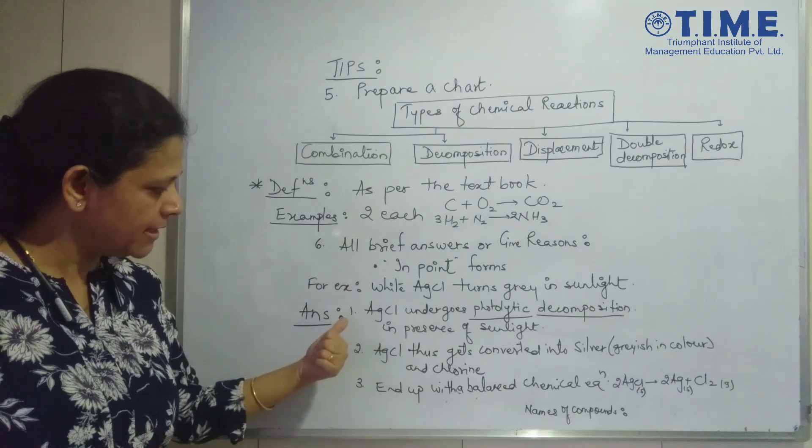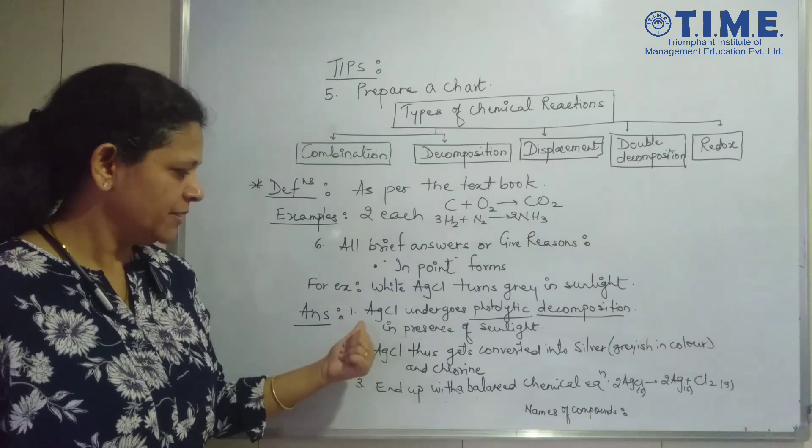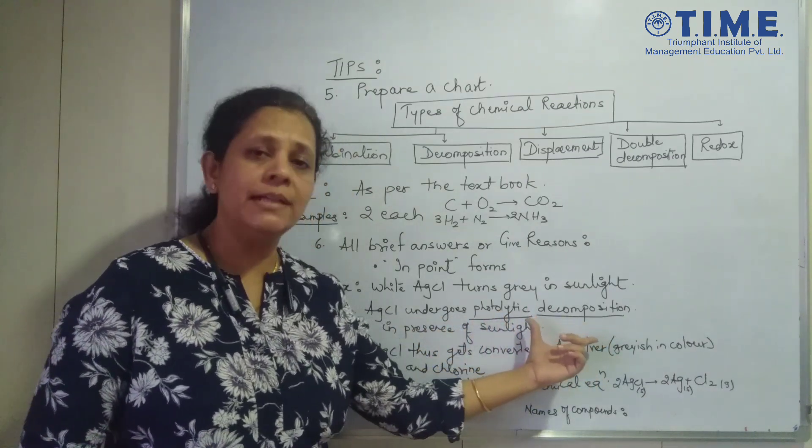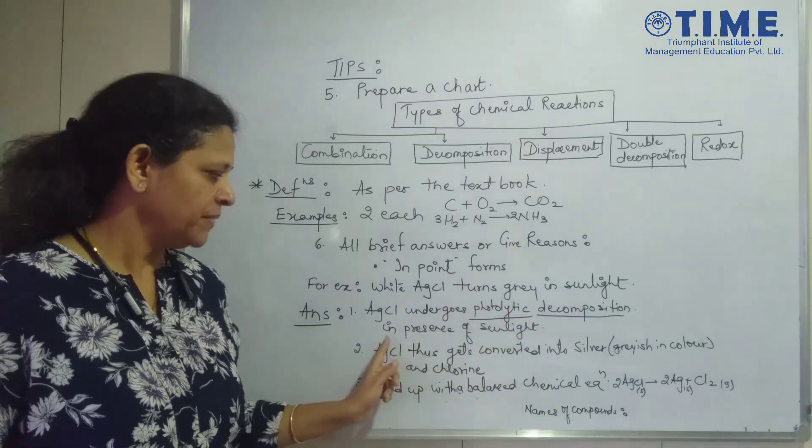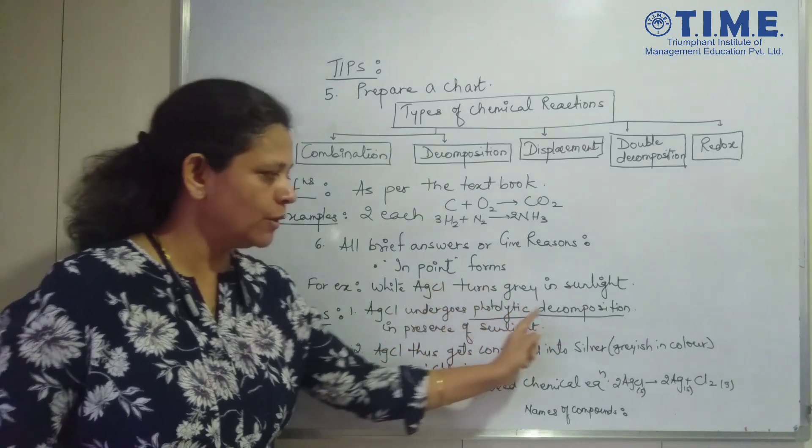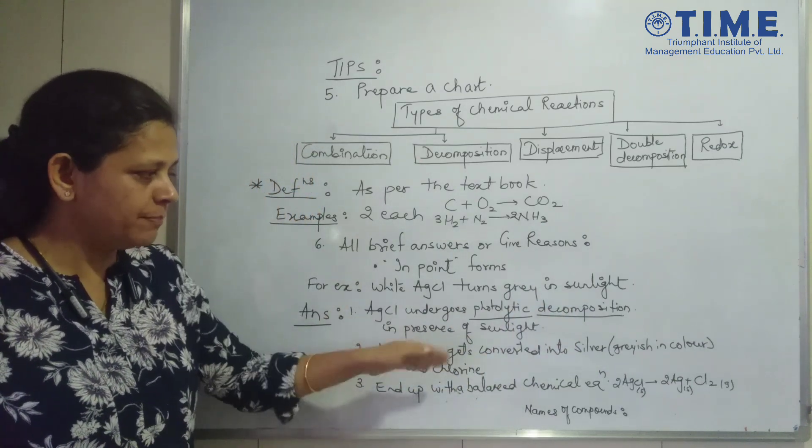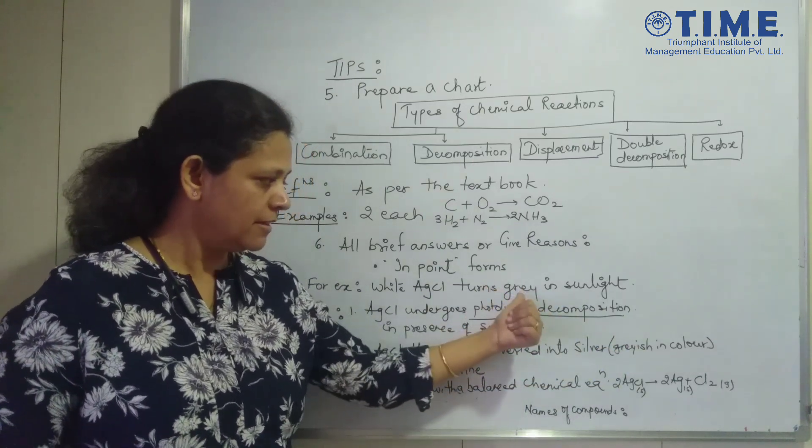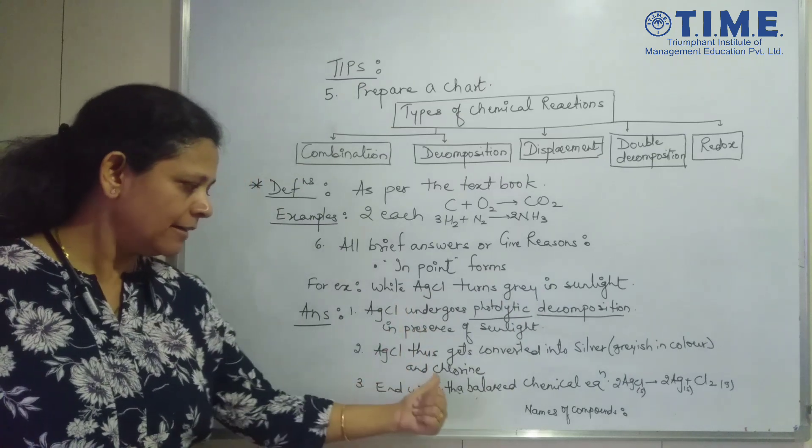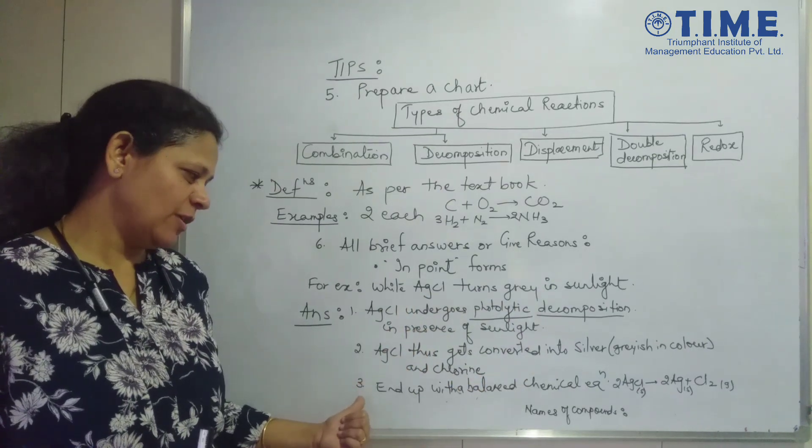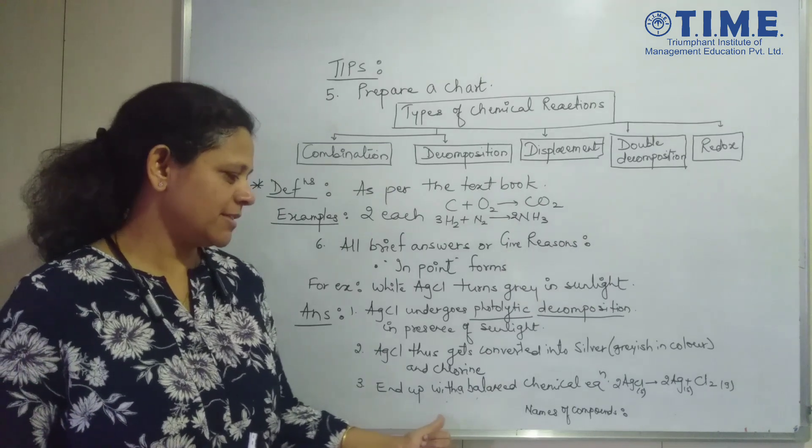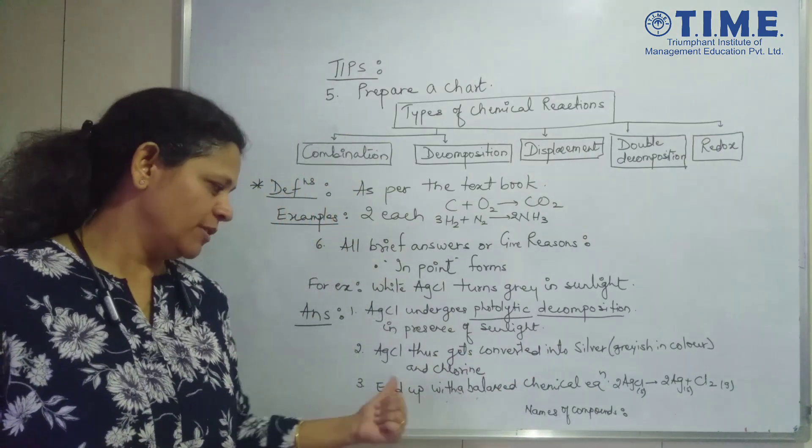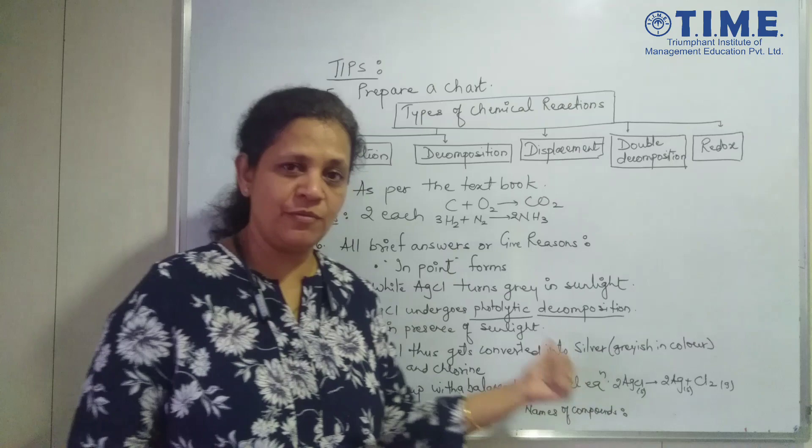Now how will you answer this particular give reason? While answering this question, what is important is like I said, you have to write point wise. The first point, silver chloride undergoes photolytic decomposition. A very very important term which must come in your answer. In presence of sunlight. So it undergoes photolytic decomposition. Second, what happens when it undergoes decomposition? It gets converted into silver which is greyish in colour. That is what is asked in your question. And chlorine gas. The last point in your answer. Very very important. End up your answer with a balanced chemical equation. Wherever possible. Please write a balanced chemical equation for your answers.